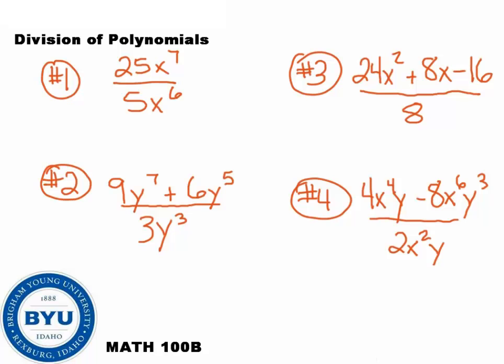Let's check your answer and see how you did. First thing we're doing here is dividing. So 25 divided by 5, well that gets us 5. And x to the 7th divided by x to the 6th. When you divide powers, you subtract the exponents. So we'd have x to the 7 minus 6, which is just 5x to the 1. And you don't even have to put the 1.